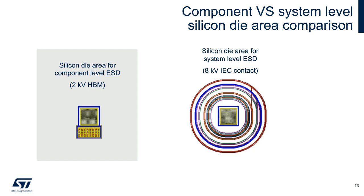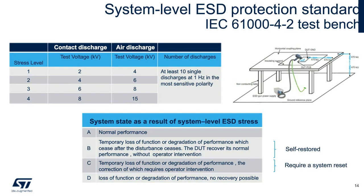Now let's review the IEC 61000-4-2 standard. This is a system-level standard — it is not related to components, so it applies to a complete application with its enclosure. This standard defines four stress levels and four levels of results. The most severe level is level 4 with 8-kilovolt contact and 15-kilovolt air applied. The test result is rated A when the device performs normally without any disturbances. At ST Microelectronics, all ESD protection components comply with or exceed this level 4.